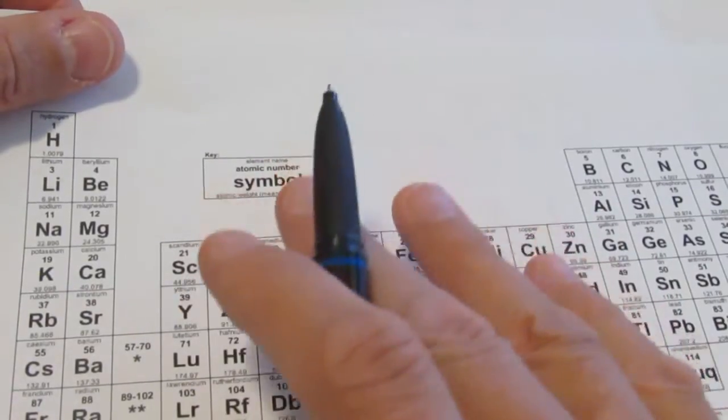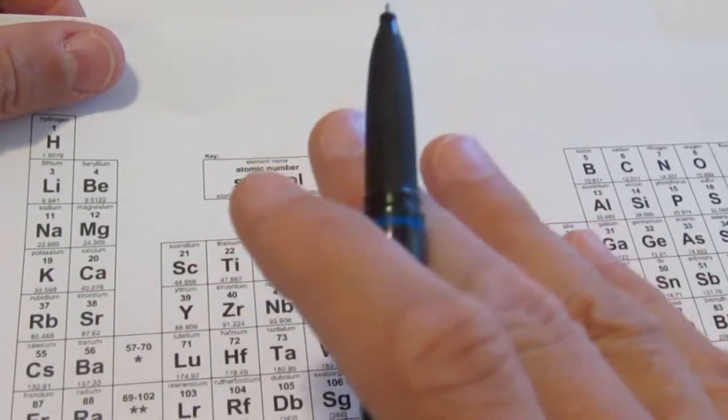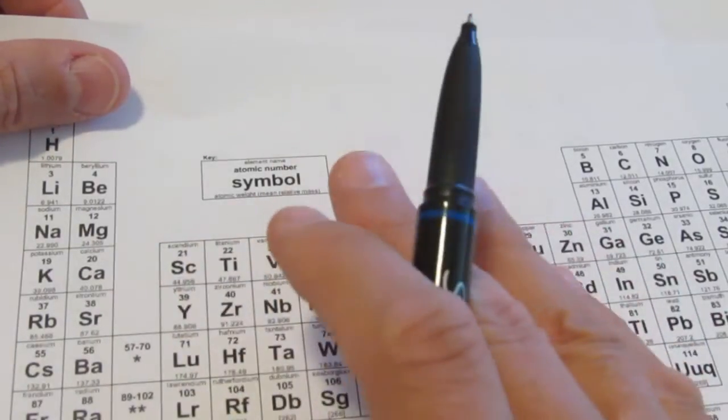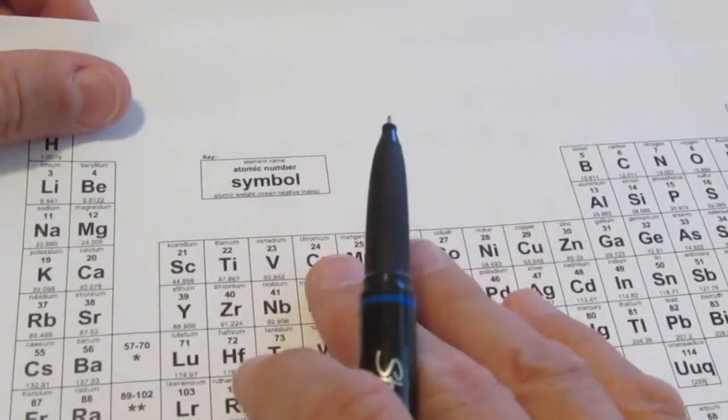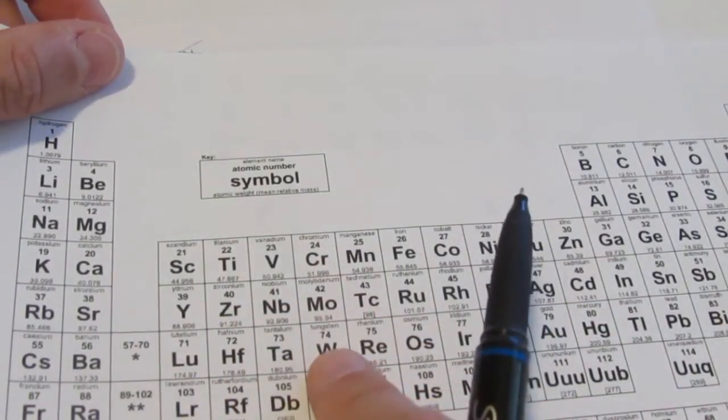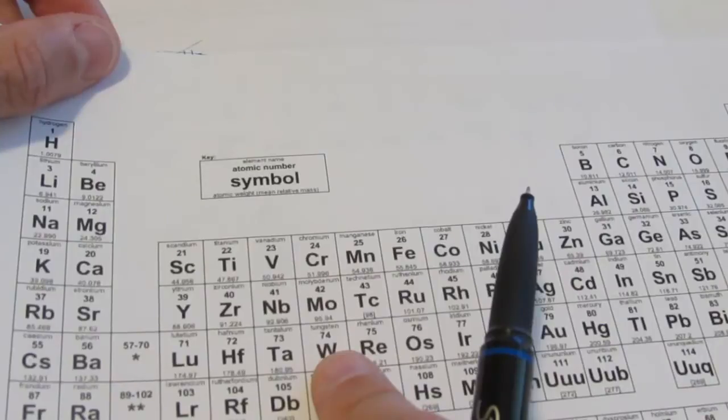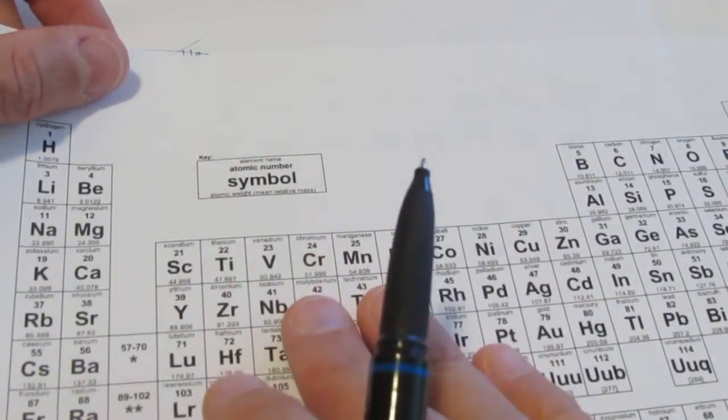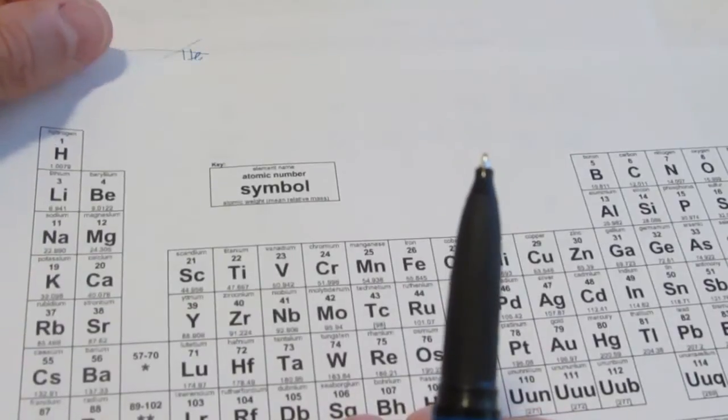Mendeleev noticed this not just with melting points, but he also noticed it with boiling points. He noticed a cyclical property with densities, and he noticed specifically how they reacted with the elements chlorine and how they reacted with the element oxygen, the ratio in which they reacted. And once again, we saw cycles.